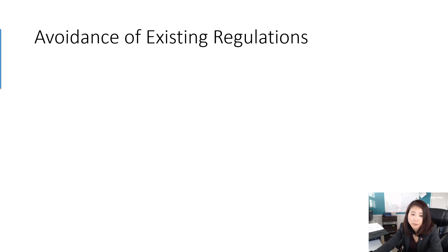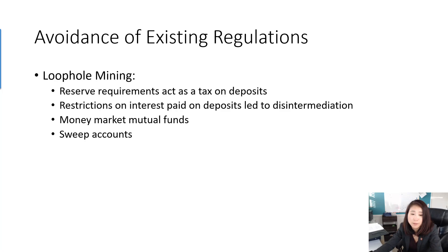Another driver of innovation is regulation. The Federal Reserve imposes two key regulations. First, the reserve requirement: if you have $1,000 in deposits, you can't lend all of it out — you must keep a certain portion in reserve so that when depositors want to withdraw money you can pay them. But this means the bank can't use that reserve money to make profit — it basically acts like a tax on deposits, hurting the bank's potential profitability.